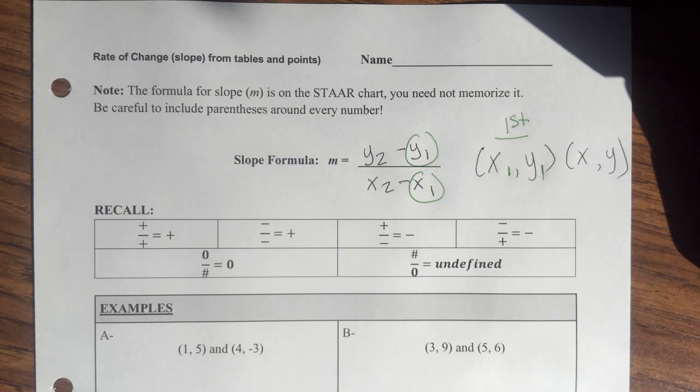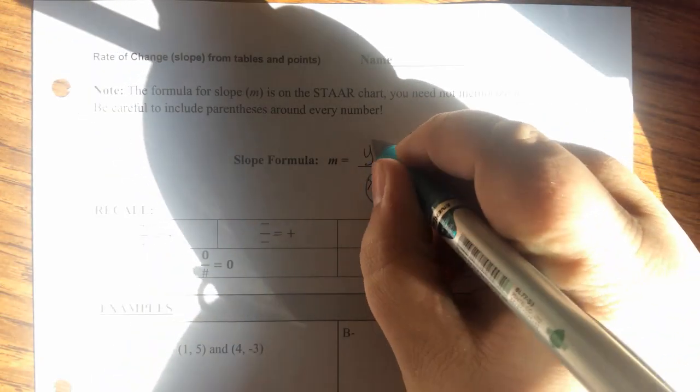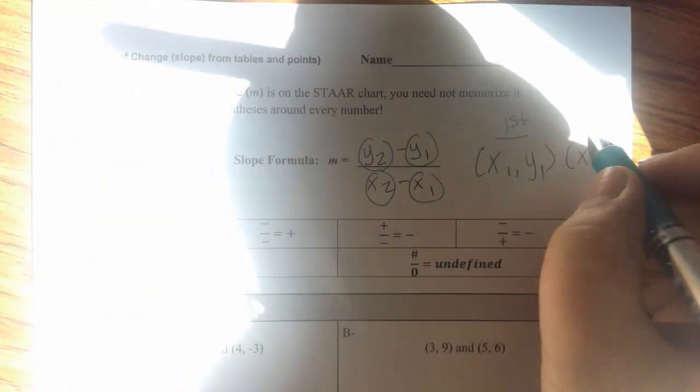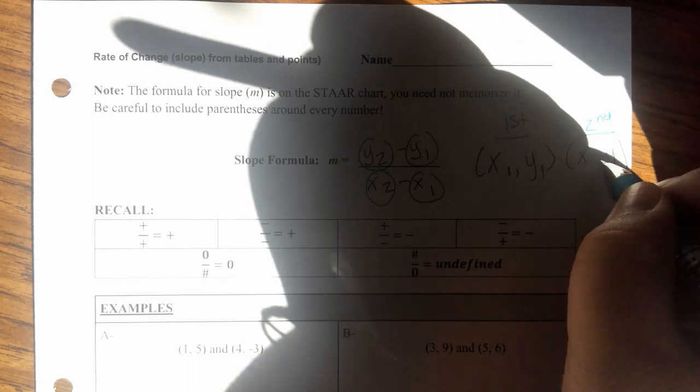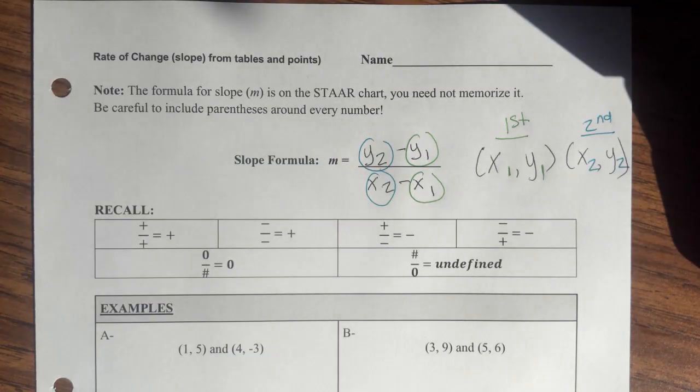Same thing for the next one. Trying to find a lighter color. Okay, so we've got x2 and y2 coming from the second ordered pair then, x2, y2. Alrighty.